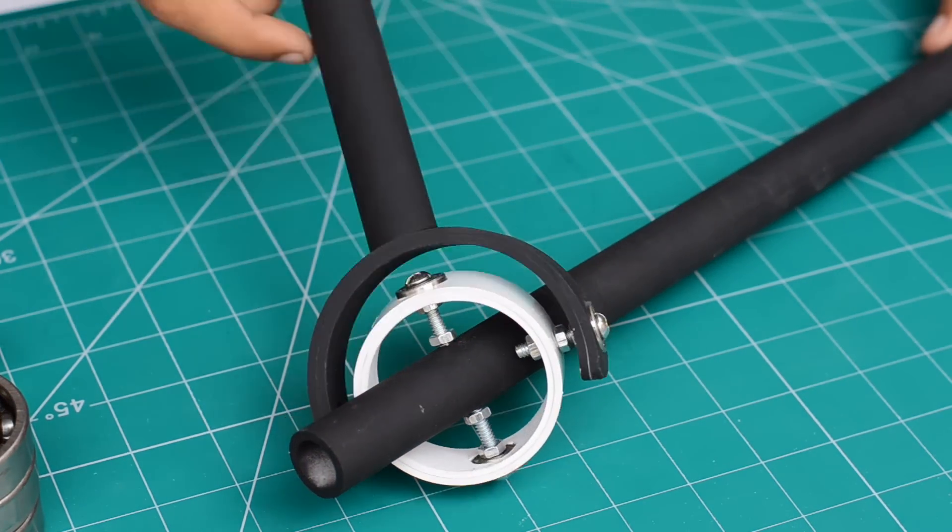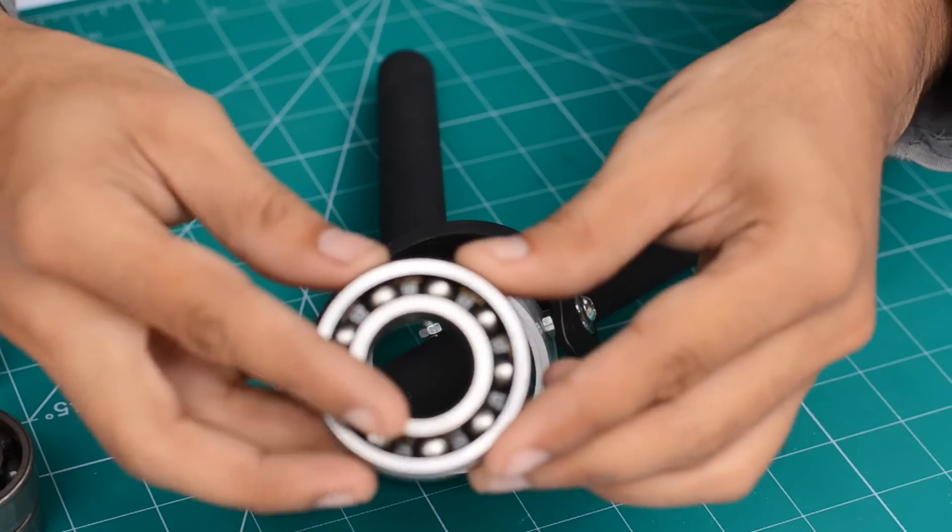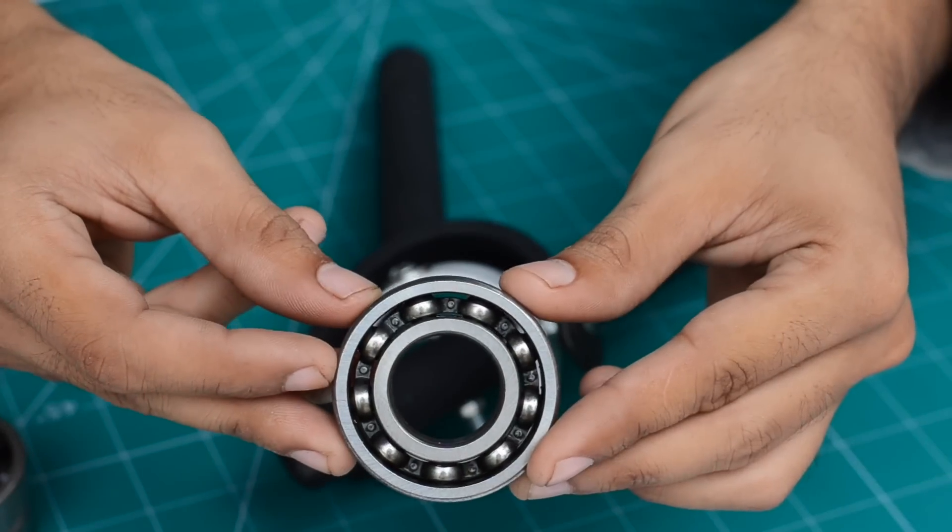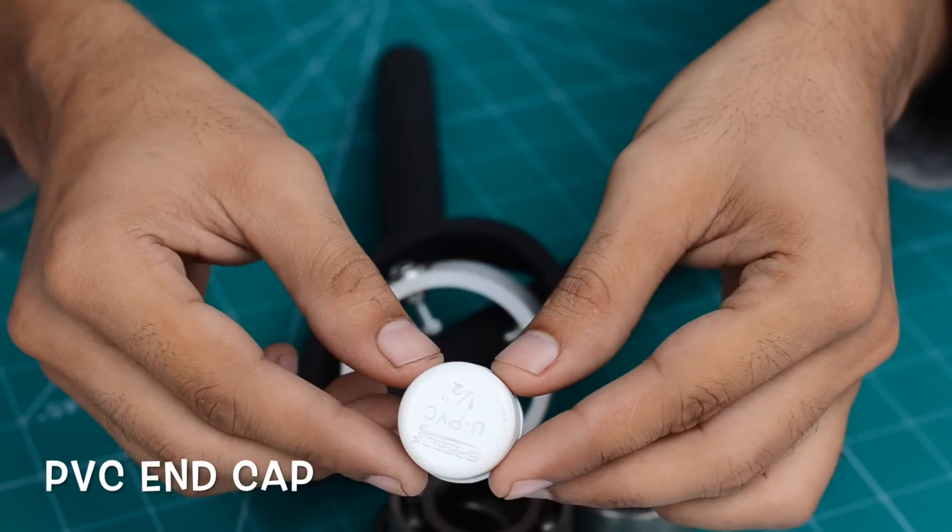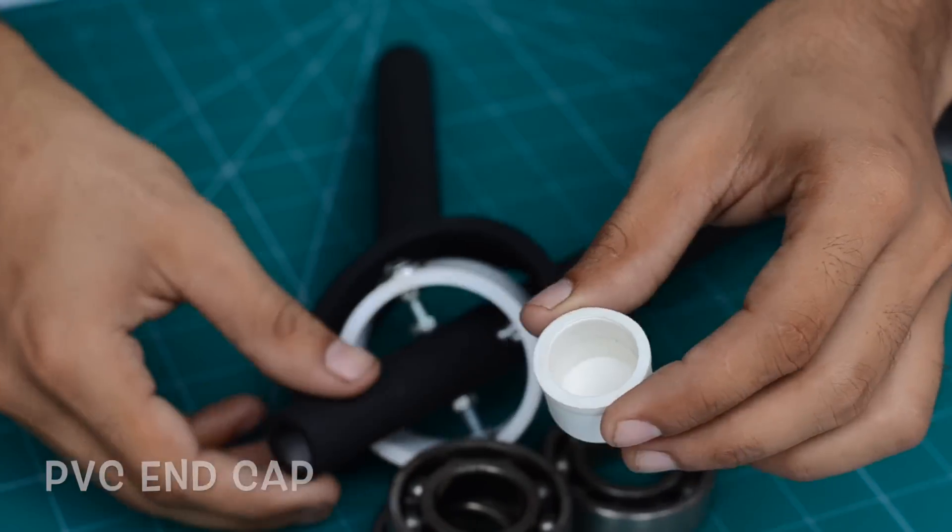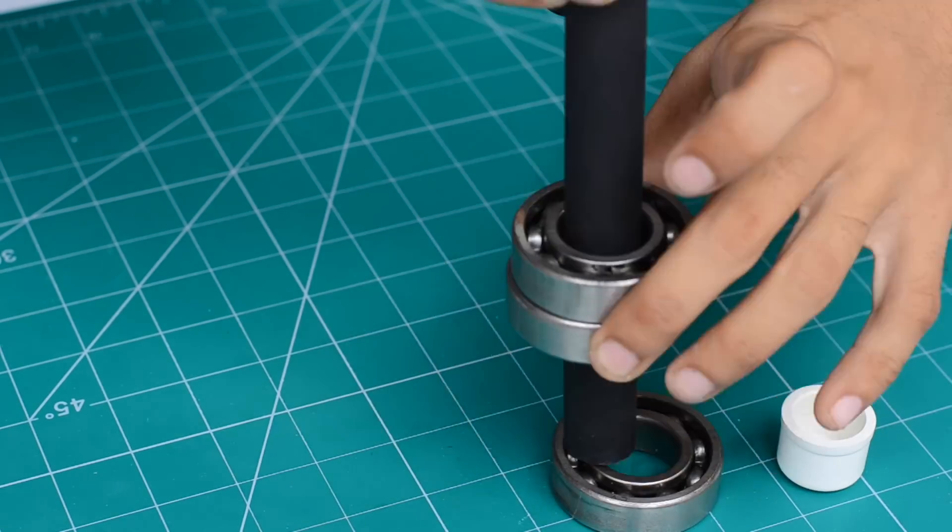The gimbal looks great after the paint job has been done. For the deadweights I'm going to use a bunch of old ball bearings similar to the ones used in car engines. They have good weight to them and they provide good stability to the whole gimbal.